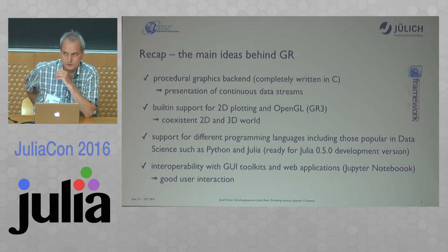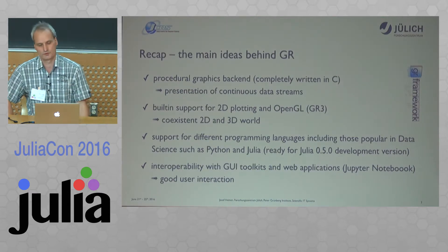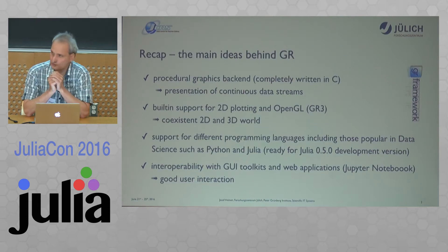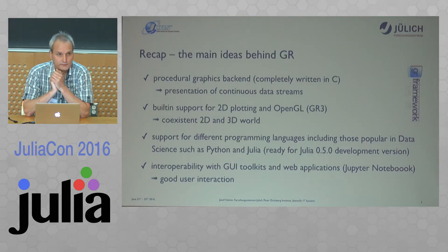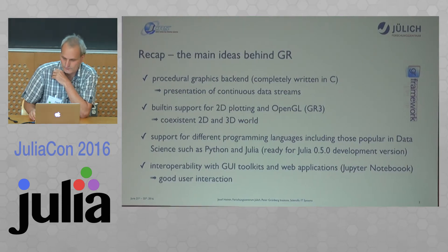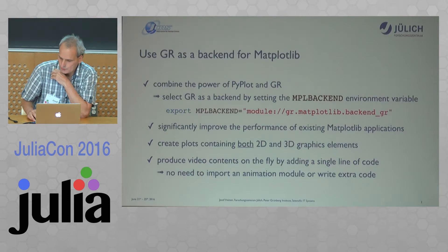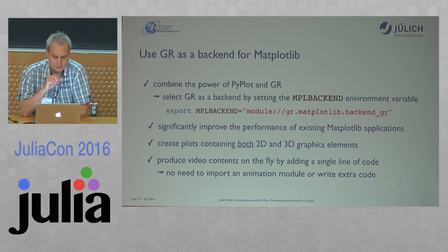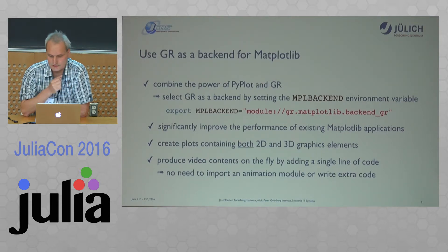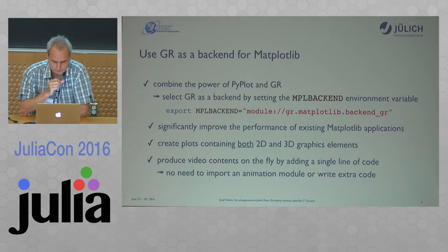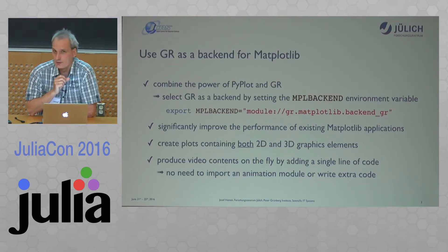We don't only focus on Julia or C — we also provide our software for different Python versions. One major point is that we want to realize interoperability for different graphical user interfaces like WX widgets or QT, to have better user interaction. GR can be used as a backend for Matplotlib, which can speed up its performance. The same applies to Julia, where Tom has written his Plots software which uses GR as a primary backend, giving much higher display rates for most applications.